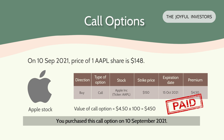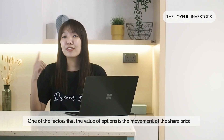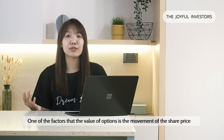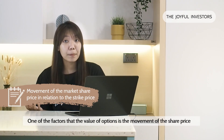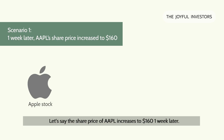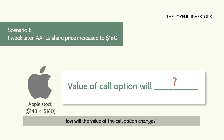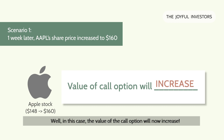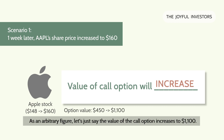You purchased this call option on 10 September 2021. One of the factors that affect the value of options is the movement of the share price in relation to the strike price. Let's say the share price of Apple increases to $160 one week later. How will the value of the call option change? Well, in this case, the value of the call option will now increase — let's say to $1,100.